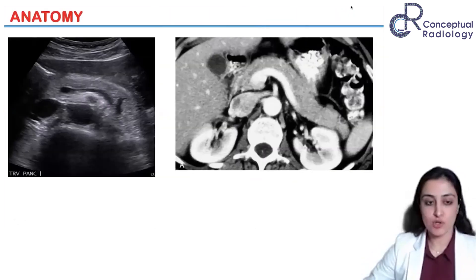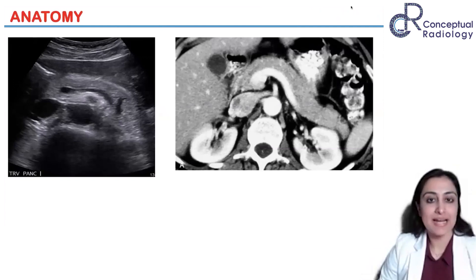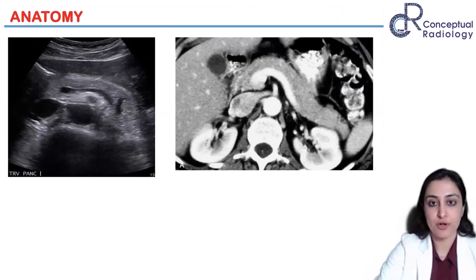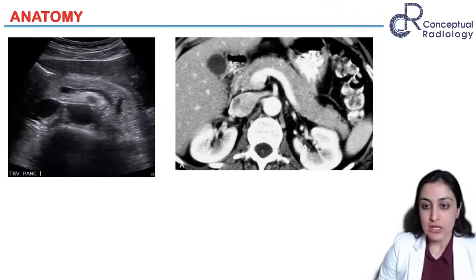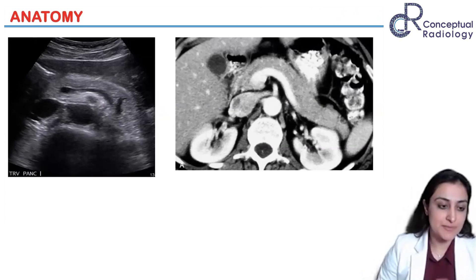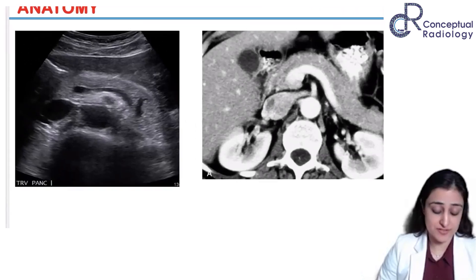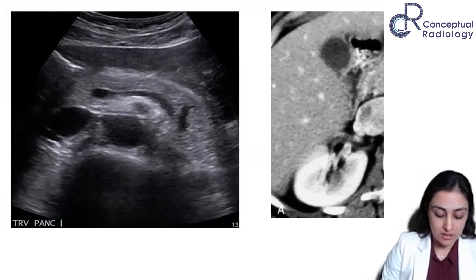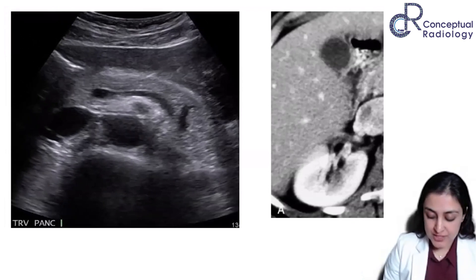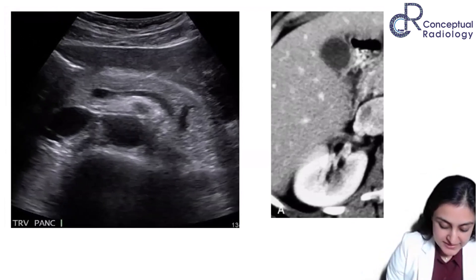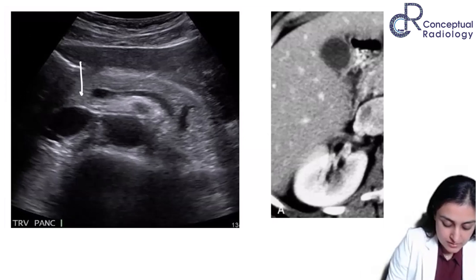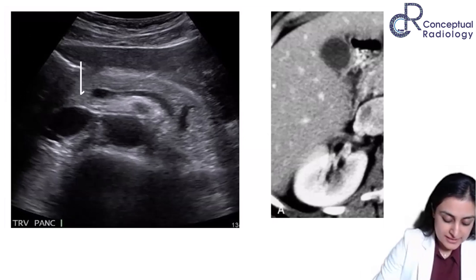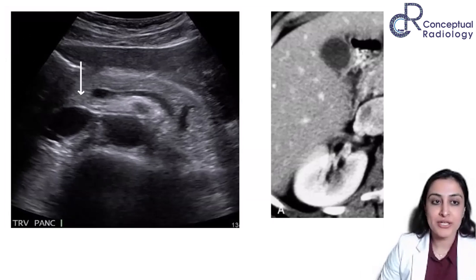So let's briefly talk about the anatomy. It's something that is important from ultrasound and CT point of view — you should know the cross-sectional anatomy. For the first years, mainly just to give an orientation: this is the transverse view of the pancreas. So if I ask you what is this part — head, neck, body, or tail — which out of the four is this?